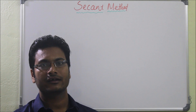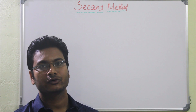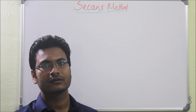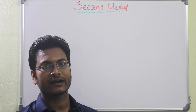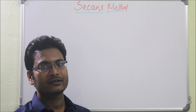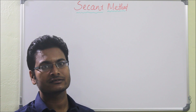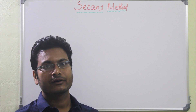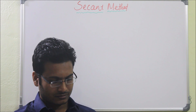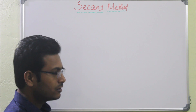In this video we will see the secant method, which is used to find the minimum of a unimodal function. The basic concept is that through successive secants we have to find the minimum of that unimodal function.